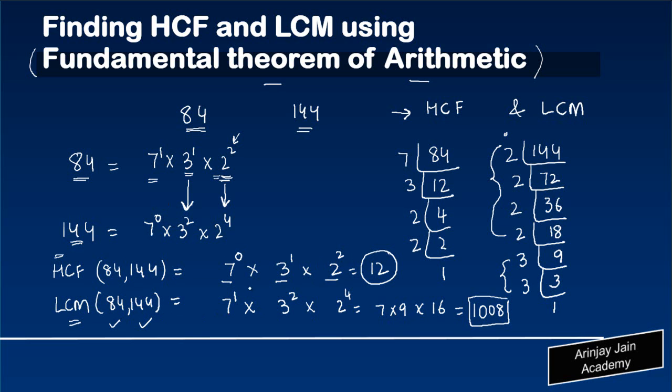For the least common multiple, we pick up the same procedure, just that the powers which are there are the ones which are the maximum. And therefore you get your highest common factor and least common multiple.